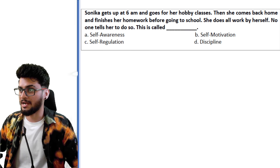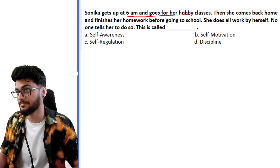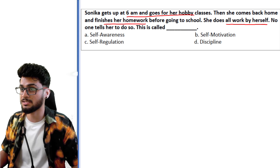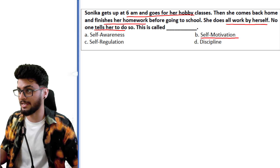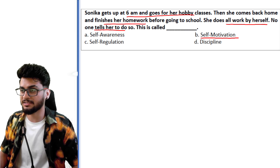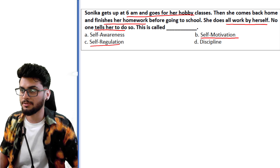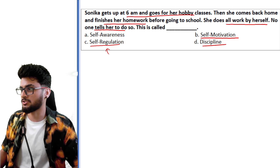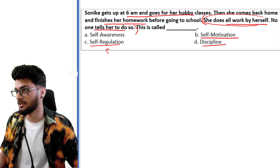'Sonika gets up at 6 AM and goes for her hobby classes. Then she comes back home and finishes her homework before going to school. She does all work by herself.' No one tells her to do so — this is called self-motivation, doing things on your own because you like it, not because of a reward. Self-awareness means knowing what you're good or bad at. Self-regulation means distributing all activities equally. Discipline is also not the right answer here, because the key statement is 'she does all work by herself' — pointing directly to self-motivation.